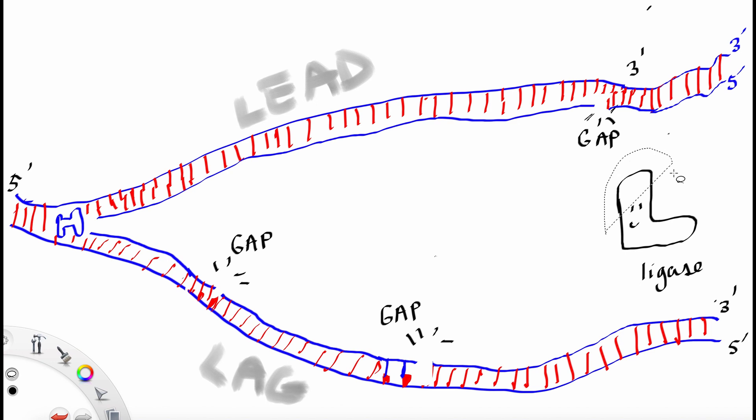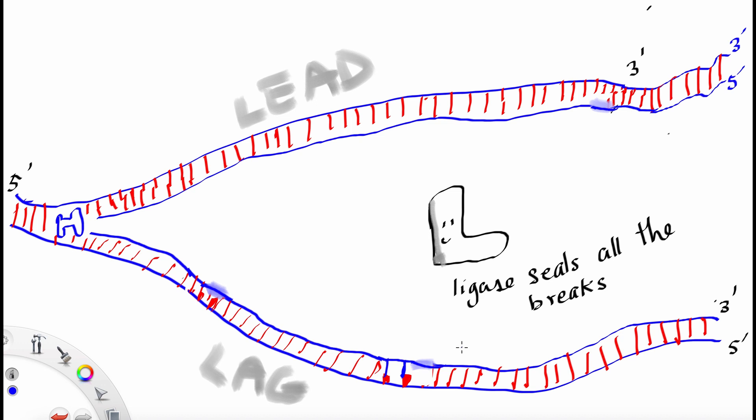At the end, there's one more gap left. Phosphodiester links need to form and ligase seals all the breaks with the phosphodiester links.